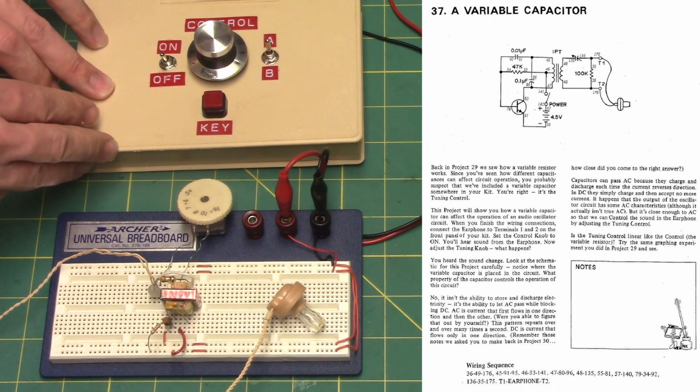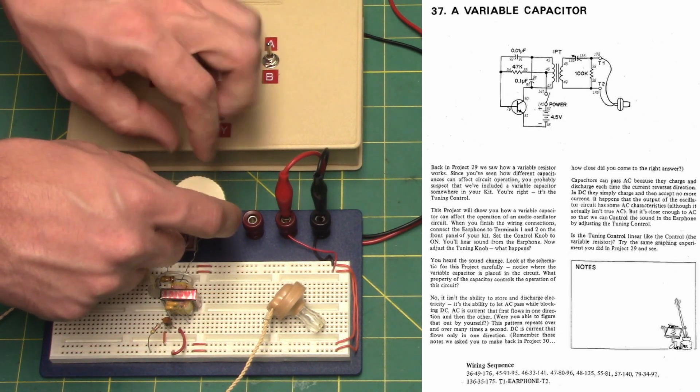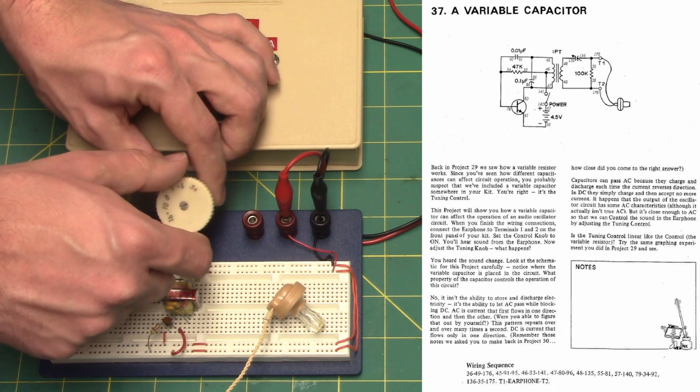Set the control knob to on. You'll hear a sound from the earphone. Now, adjust the tuning knob. What happens? You heard the sound change.